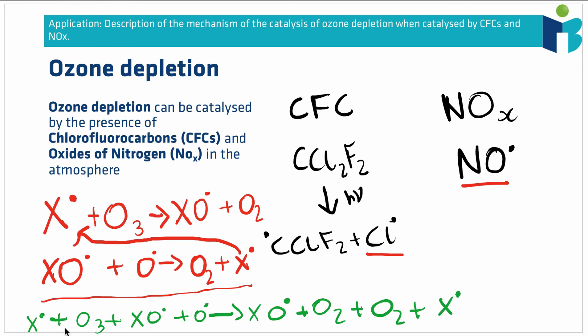What we can do is cancel out the things that appear on both sides. Our X radical gets cancelled out, our XO radical gets cancelled out. All we're left with is ozone being destroyed by coming into combination with an oxygen radical to make two completely inert oxygen molecules. We've lost our ozone, and that's really the problem here.